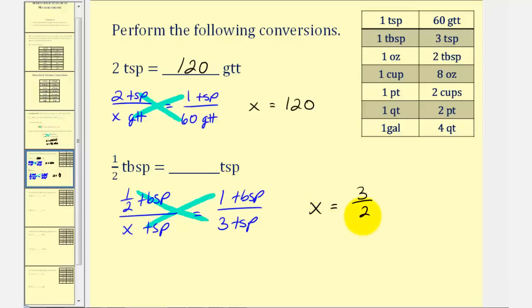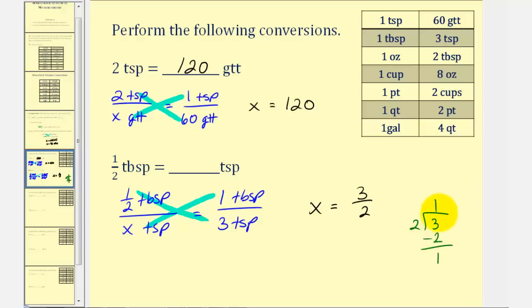So we have three halves of a teaspoon. Let's convert this to a mixed number or a decimal. Three divided by two: one times two is two, we subtract, and we have a remainder of one. Which means three halves is equal to one and one half, or one point five.